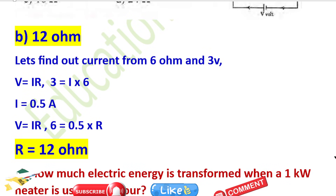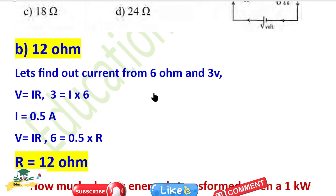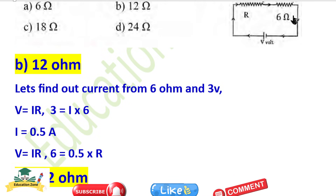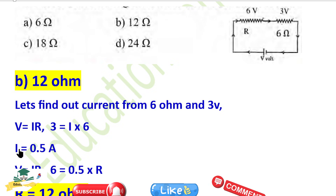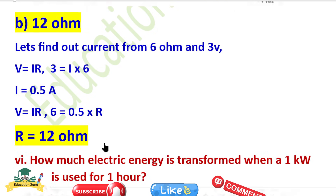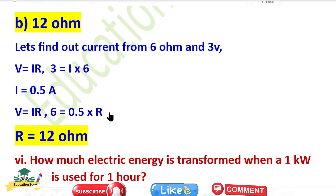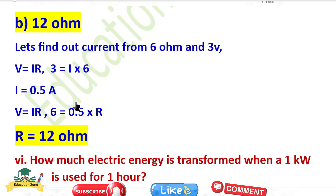First, I will find out the current from the 6 ohm and 3 volt — current is 0.5 ampere. Then I will find resistance using V = IR: 6 ohm into 0.5 equals 0.5 into R, so we can find the resistance.